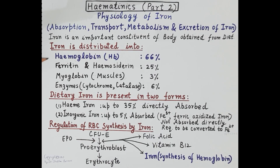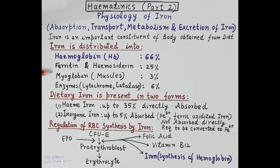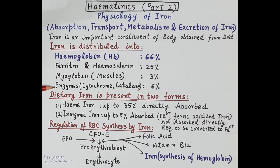Let's first talk about the distribution of iron in the body. Sixty-six percent of iron is present in hemoglobin. Twenty-five percent of iron is stored in the body as ferritin and hemosiderin. Three percent of iron is present as myoglobin in the muscles, while six percent of iron is present in iron-containing enzymes like cytochrome and catalase.